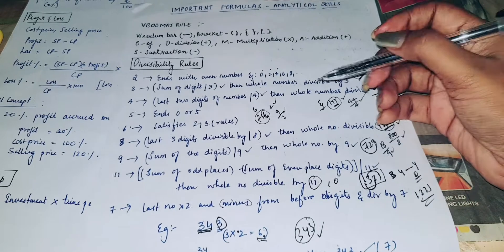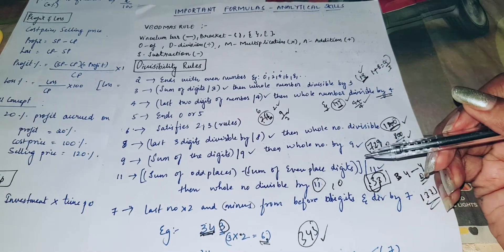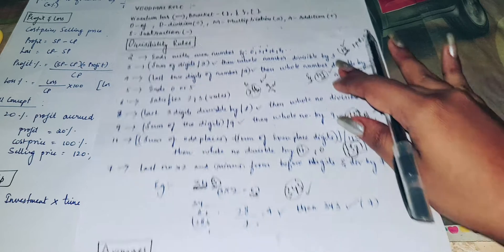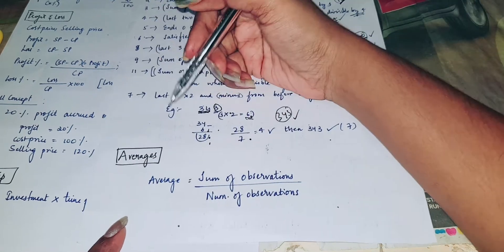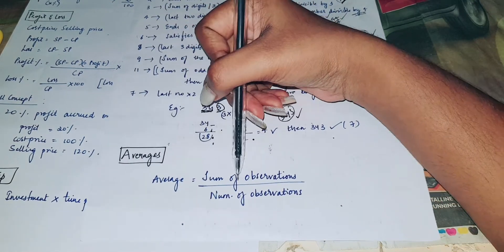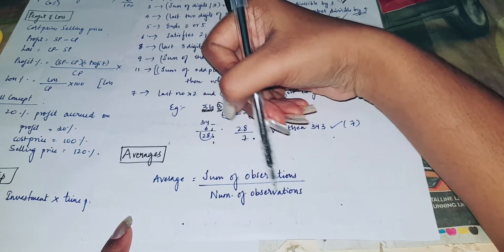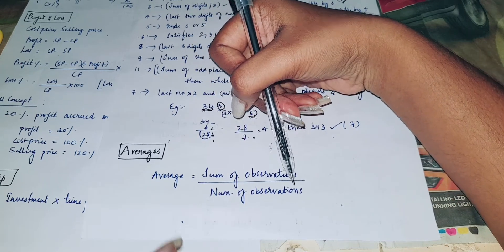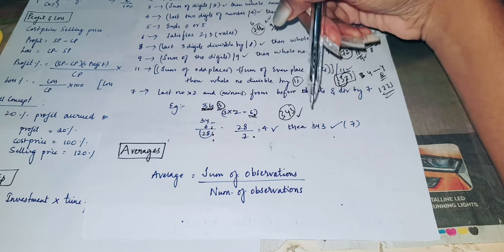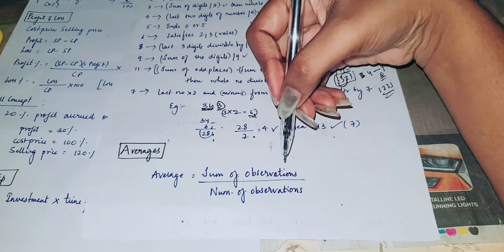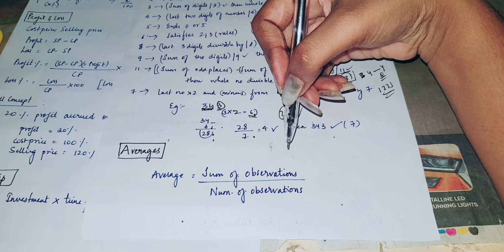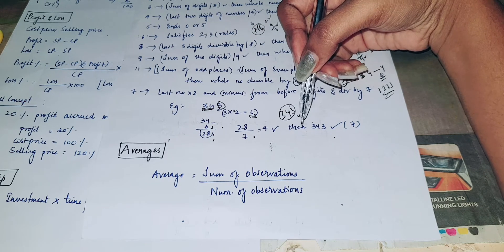So if you want to apply these rules, you will have to elaborate as well as score 5 marks. Next topic is averages. Average is nothing but sum of the observations divided by number of observations. This is basic. If you know these formulas, you will have at least 1 or 2 marks.